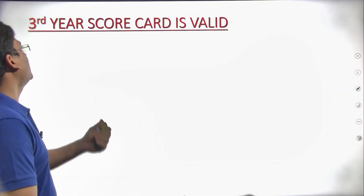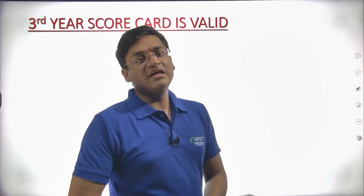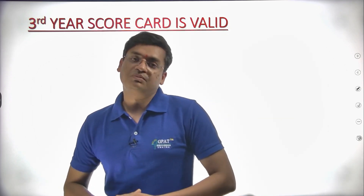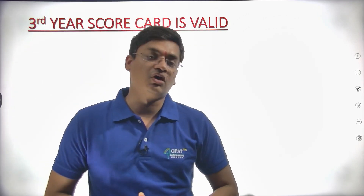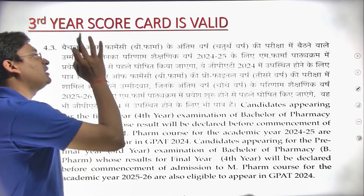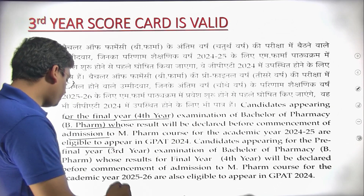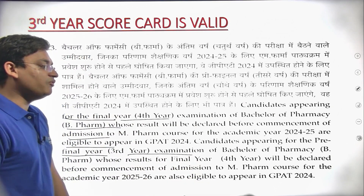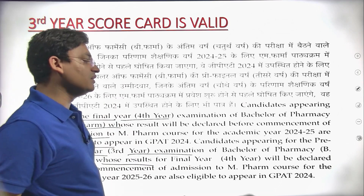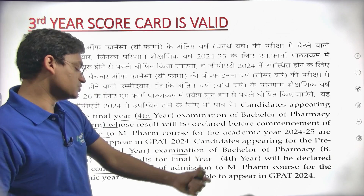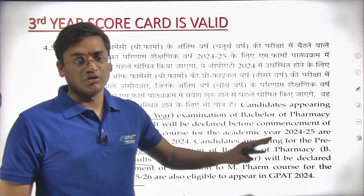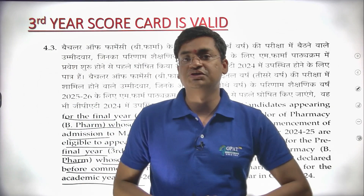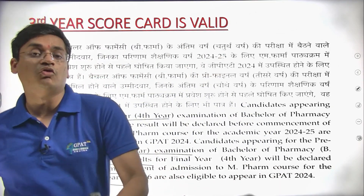Next, the change is that third year scorecard is now valid. When NDA was conducting this examination, third year students were not allowed and the scorecard of third year qualified students was not valid for higher admissions like M.Pharm. But now onwards, third year scorecard is valid. Candidates appearing for the pre-final year, that is third year of B.Pharm, whose final year results will be declared before commencement of M.Pharm admissions for 2025-26, are also eligible to appear in GPAT 2024.